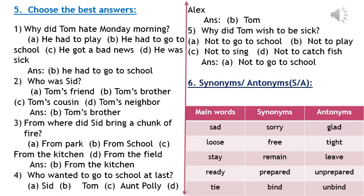Question number three: From where did Sid bring a chunk of fire? From the kitchen. Question number four: Who wanted to go to school at last? Tom. Question number five: Why did Tom wish to be sick? Not to go to school.